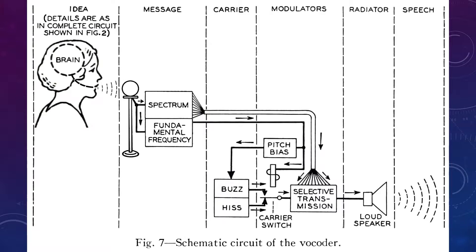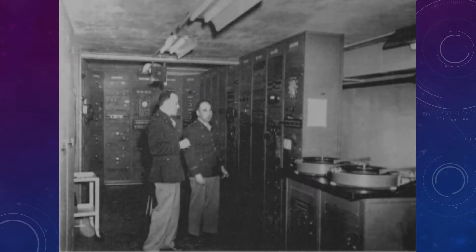In the 1920s, Homer Dudley, a scientist at Bell Labs, developed a device called the vocoder — short for voice encoder — which took speech and split it into various frequency bands. The vocoder was quickly adopted by the military for encoding voice transmissions during the war.